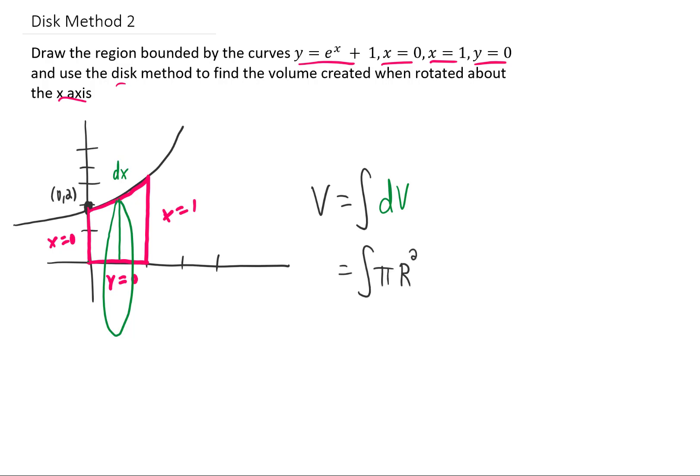Well, the volumes of each one of those little disks is just gonna be pi times the radius squared times dx in this case. And you'll notice that wherever I drew this little disk, its radius was going to be given by this function, e to the x plus 1. So we can just replace r with e to the x plus 1. And again, we're gonna integrate from the lowest value of x, which is 0, to the highest value of x, which is 1. That's our setup. Now, how do we integrate it?